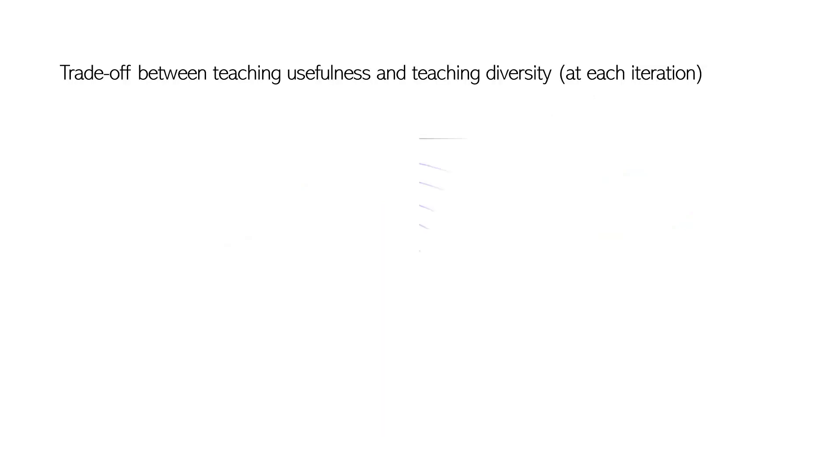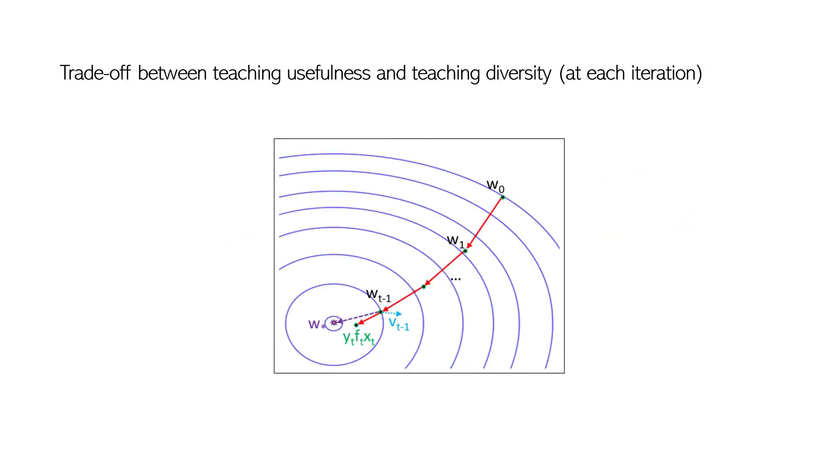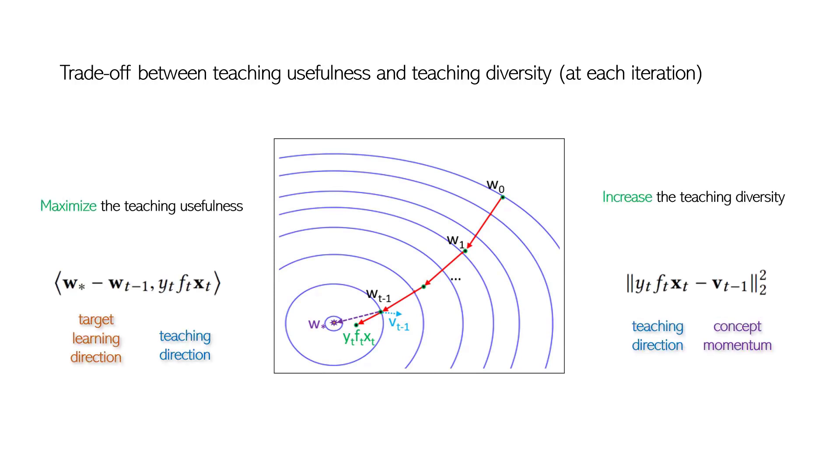The main idea of JEDI is the trade-off between the teaching usefulness and the teaching diversity. In each teaching iteration, JEDI assumes a gradient descent-based learner is learning towards the target concept θ* by maximizing the usefulness of the next teaching example and also increasing the diversity of the teaching sequence.